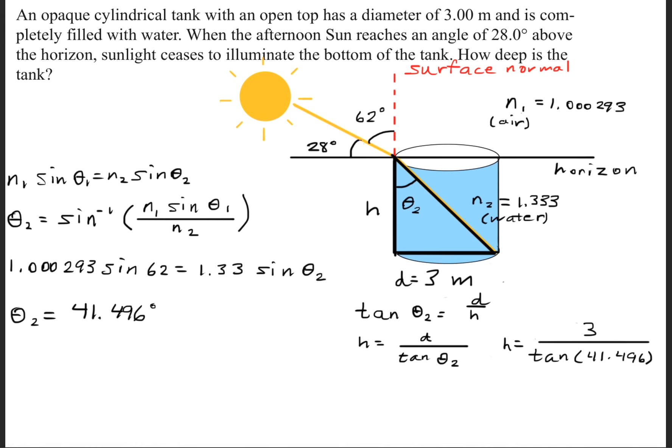We can do the tangent of theta 2 is equal to the distance divided by the height, and this distance right here, we're given that it has a diameter of 3 meters. So from this whole entire width, this distance will be 3 meters. So we'll go ahead and rearrange, solve for H. So we'll have 3 divided by tangent of 41.496, and we'll get a height of 3.39 meters.